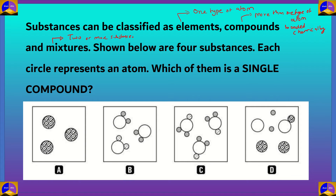In mixtures, the substances are not chemically combined, and each substance retains its own properties. For example, a mixture of A and B would show the properties of both substance A and substance B. Now, the question says: shown below are four substances, each circle represents an atom — which of them is a single compound? Option A is made up of one atom, with the same atom being repeated.